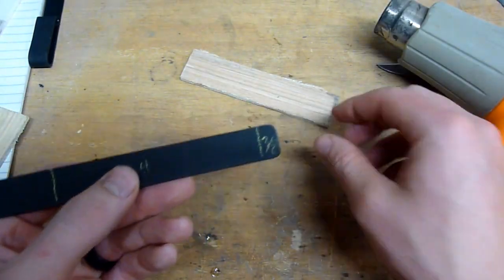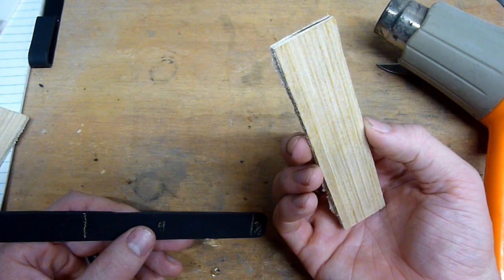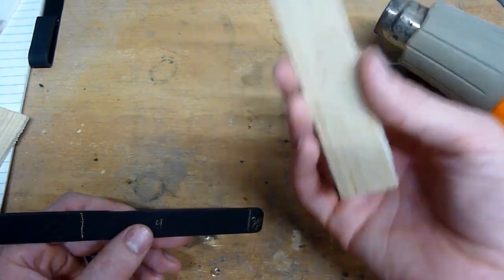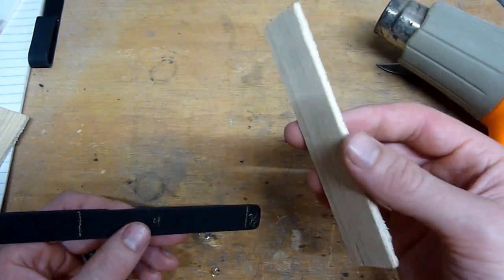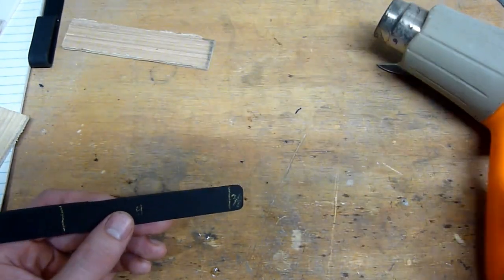Before you start bending you want to find yourself a quarter-inch thick piece of material. This is just a quarter-inch thick piece of plywood. You could probably do it by hand without having a piece of plywood but it really helps if you have something that's a quarter inch thick to aid you in bending this.